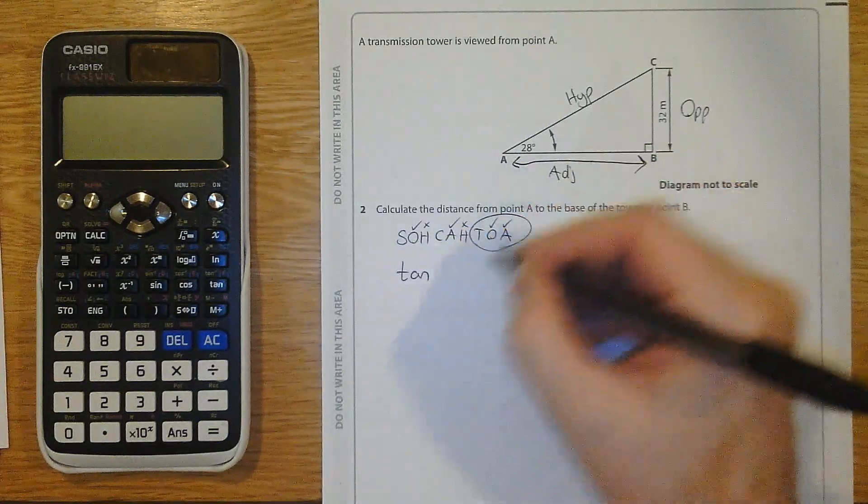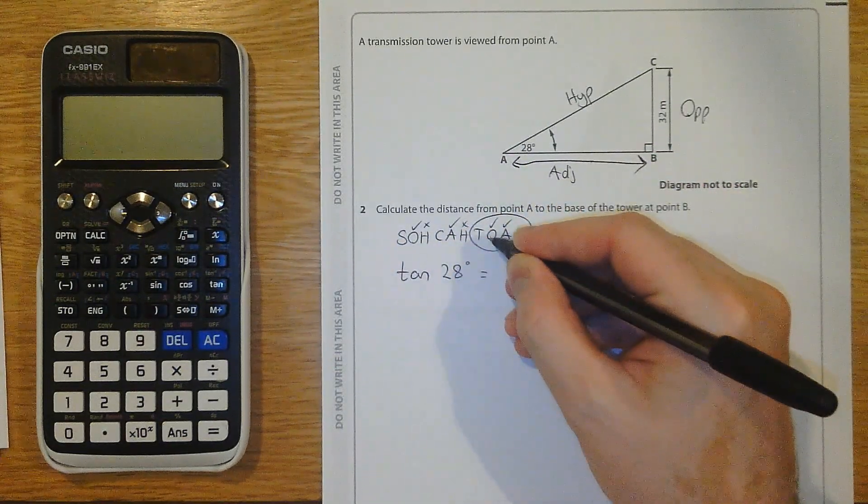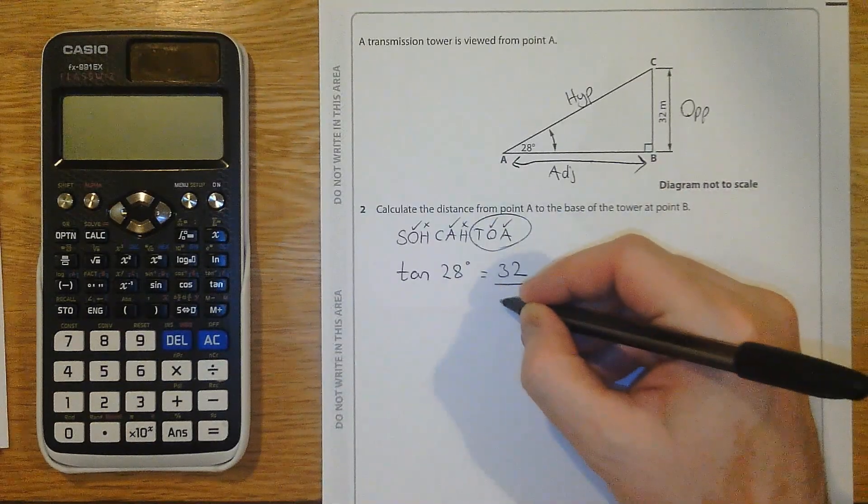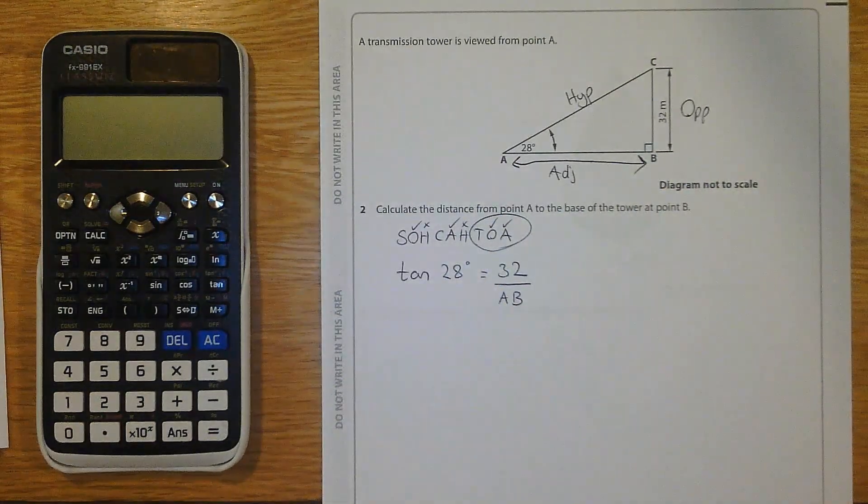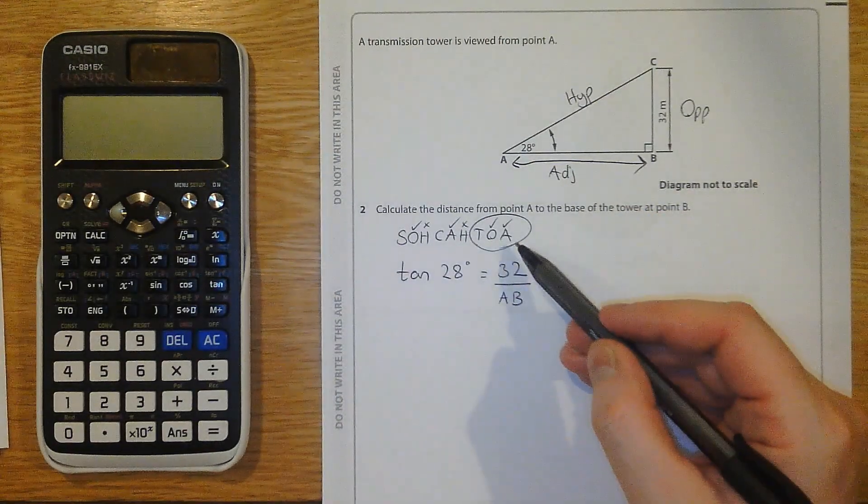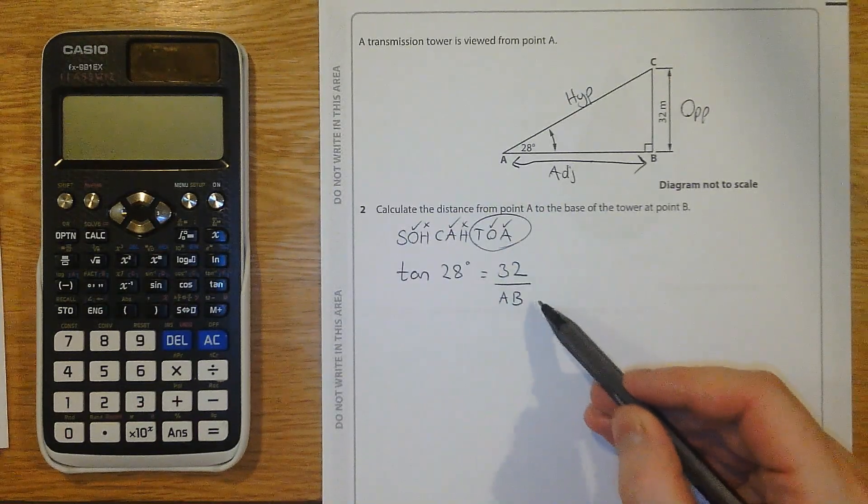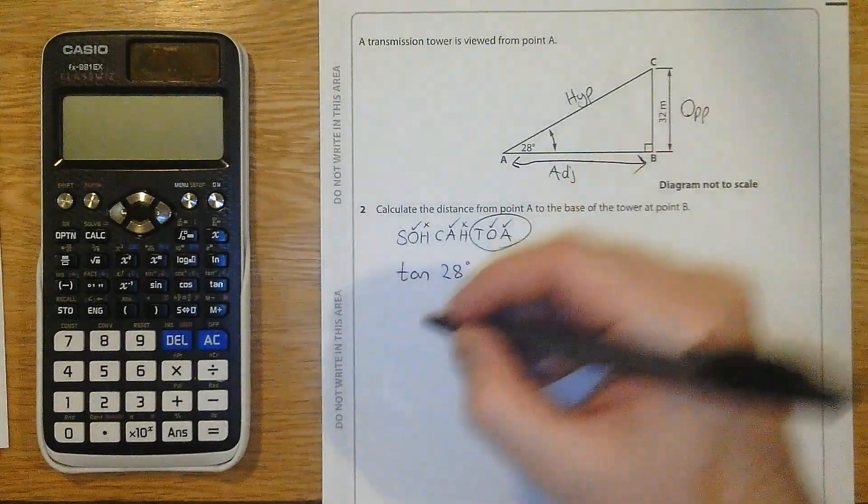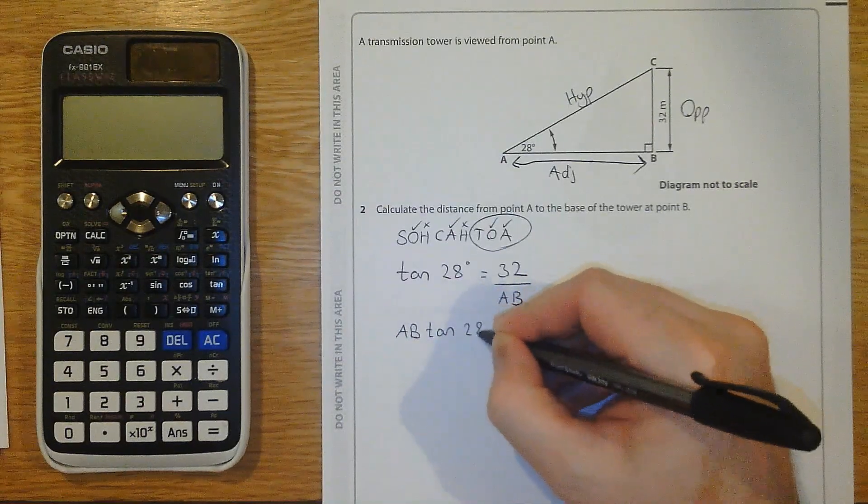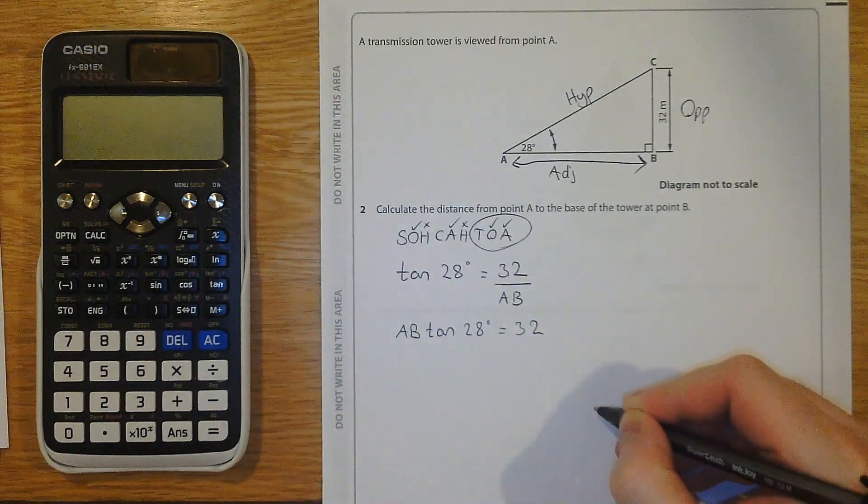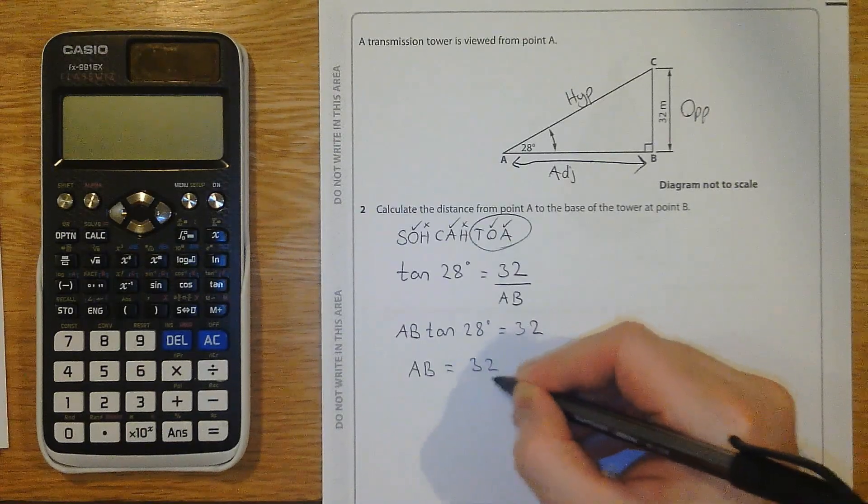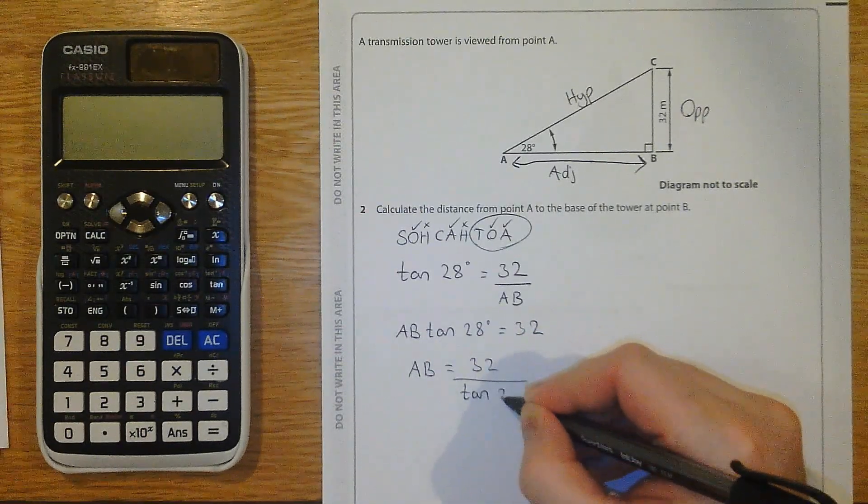Tan of 28 degrees is equal to the opposite, which is 32, over the adjacent, which I don't know, but it's called AB. That's my substitution. The first mark was for identifying that it's tan. My working here shows me that. Second mark for substitution. The third mark is for the rearrangement. There's two stages to this rearrangement. I can multiply both sides by the length AB, which gives me this. AB equals 32 over tan 28 degrees.